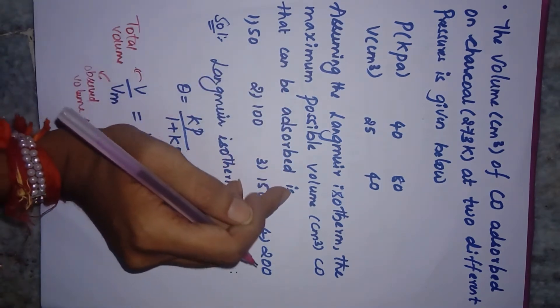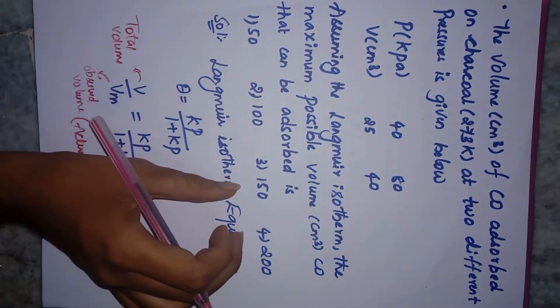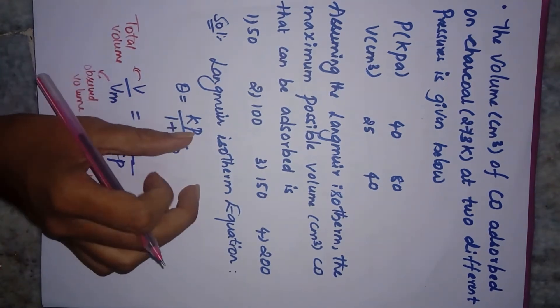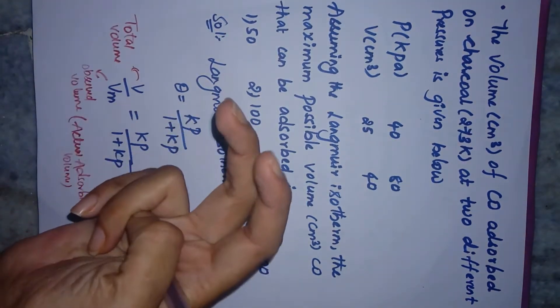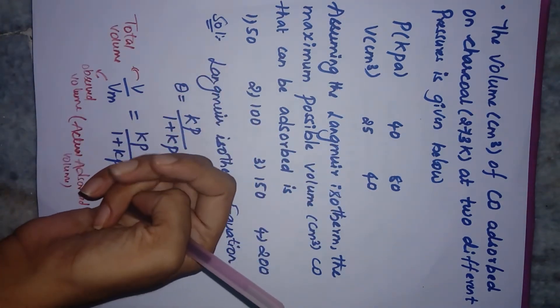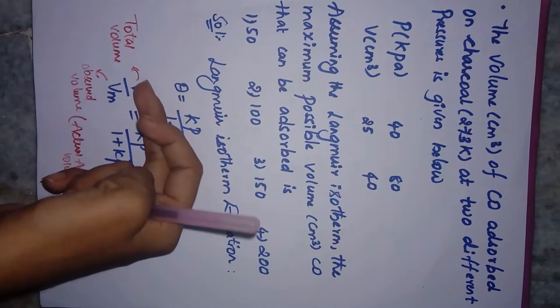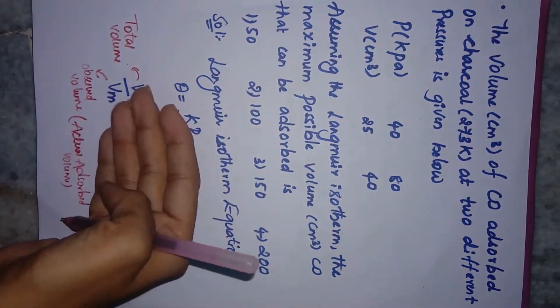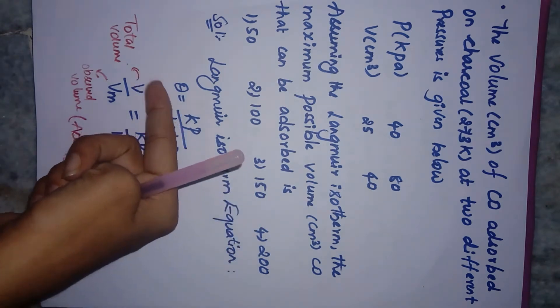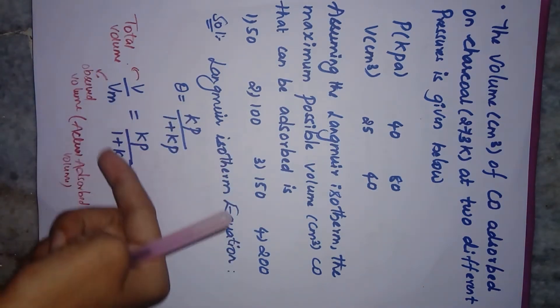The Langmuir isotherm equation is θ = kp/(1+kp). However, you've been given two different volumes, so you need an equation involving volumes. The simpler equation to use is V/Vm = kp/(1+kp), which is the required equation to solve this question.